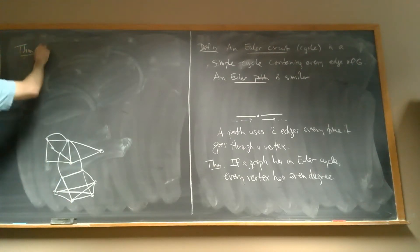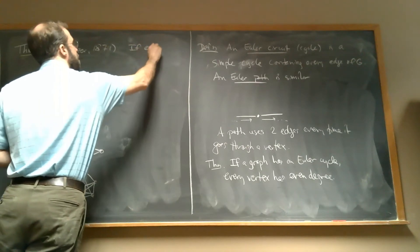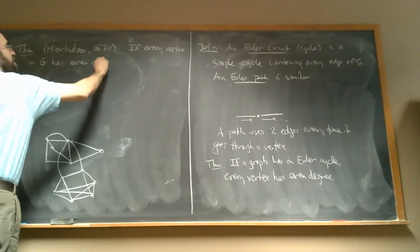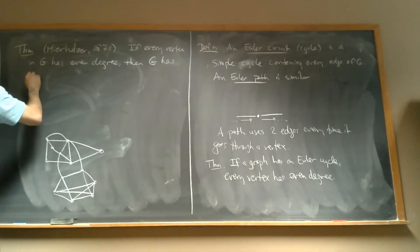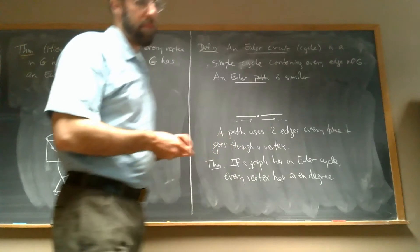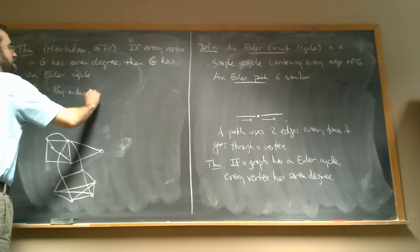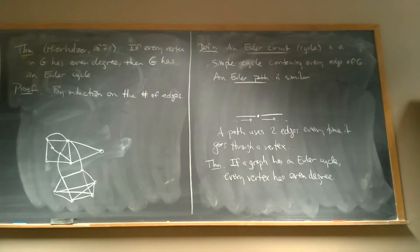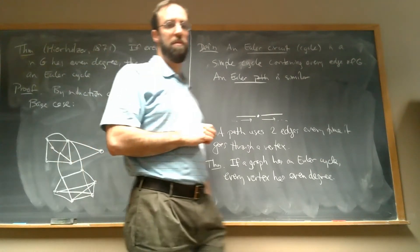So, by Hierholzer, 1871: if every vertex in G has an even degree, then G has an Euler cycle. The proof is by induction on the number of edges. For the base case, we take zero edges.